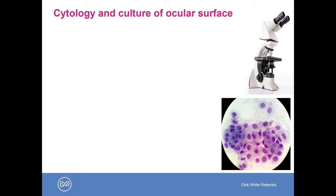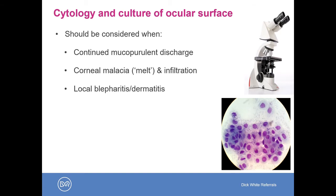Other diagnostics which you may want to perform from time to time include cytology and culture of the ocular surface, particularly in cases of continued mucopurulent discharge, if you've treated a supposed infection topically but the discharge has not resolved, if there's a complicated corneal ulcer (melting or malacic), if there's evidence of corneal infiltration — abscesses or white blood cells within the corneal stroma — and also if there are local skin infections, blepharitis, and dermatitis.